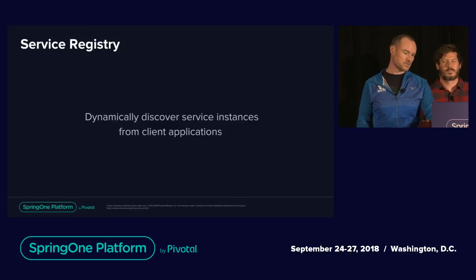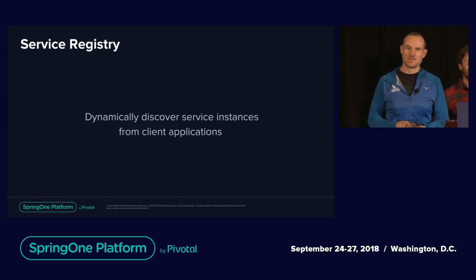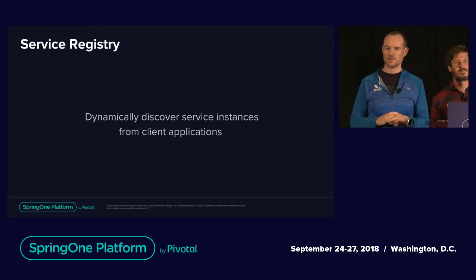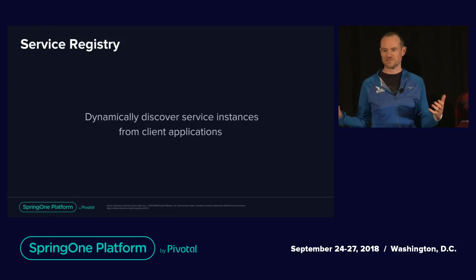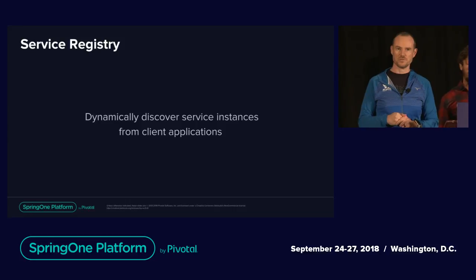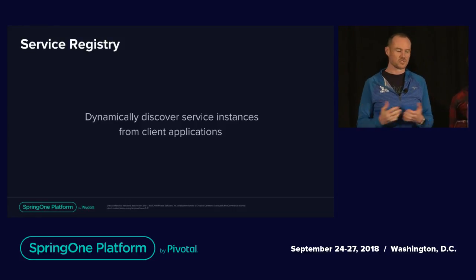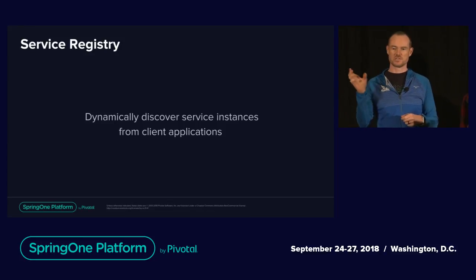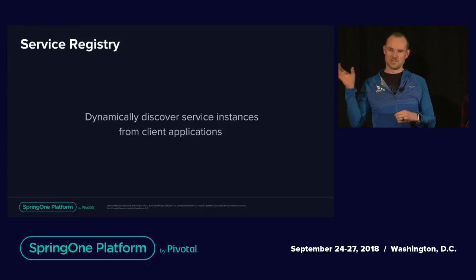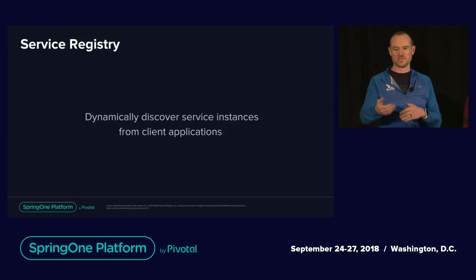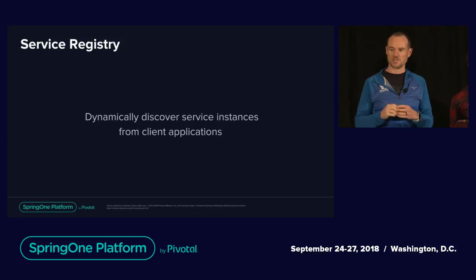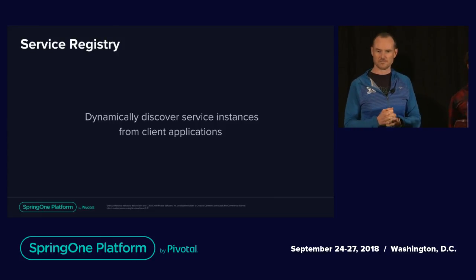Let's talk about SCS Service Registry. In the same way that you don't want to individually configure a thousand applications, you also don't want to hard-code routes to all of your different microservices. Service Registry is conceptually similar to the way DNS works: you register an application with a service registry, make a request to the named application instead of to an IP address or URL, that request goes to the service registry, which returns the actual URL for that application. It's very seamless — when you include the client libraries, Spring Cloud will automatically negotiate that exchange for you.